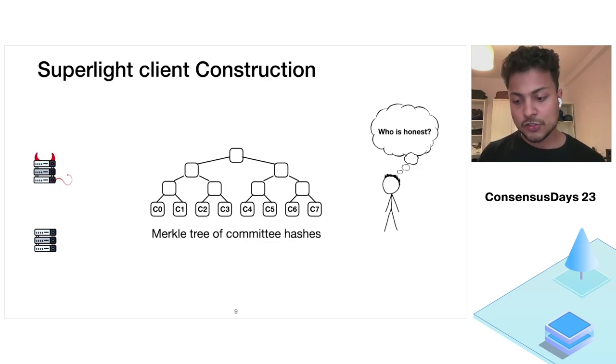This brings us to the core part of the presentation, where we're going to build super light client construction, which is going to be exponentially better than the light client as well as the straw man construction. So in the straw man construction, we saw that we first linearly found the first point of disagreement, and then did a quick check on which of them is honest. So an actual question to ask here would be, can we find this first point of disagreement efficiently?